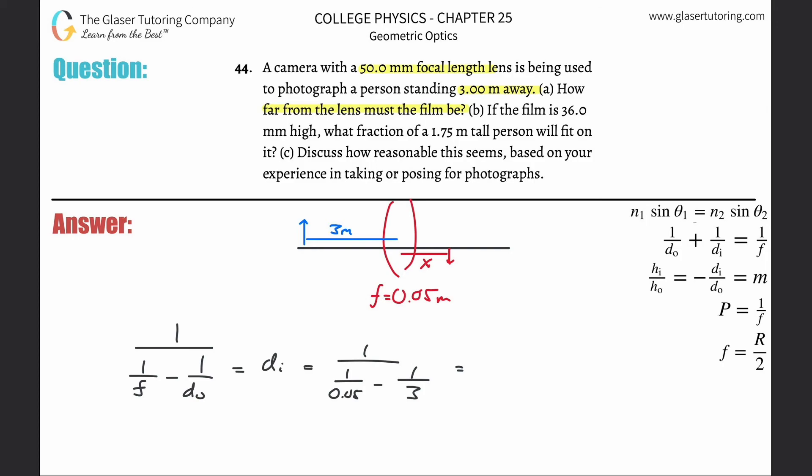Work with the denominator first: 1 divided by 0.05 minus 1 divided by 3, so you get about 19.7. And then do 1 divided by that number, 19.7, so you come up with your answer of about... so the image distance is going to be about 0.0508 or so meters.